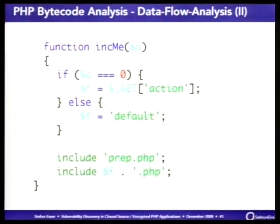Another thing you can do with simple pattern scanning is answer: which include or eval statements are 100% safe? At bytecode level you search for the include or eval bytecode opcode and check if the operand is a constant. When you have an include or eval on a constant value it can't be influenced by user input and is always safe. When you have a large PHP application with 100,000 includes, this simple check can eliminate a large number of false positives.